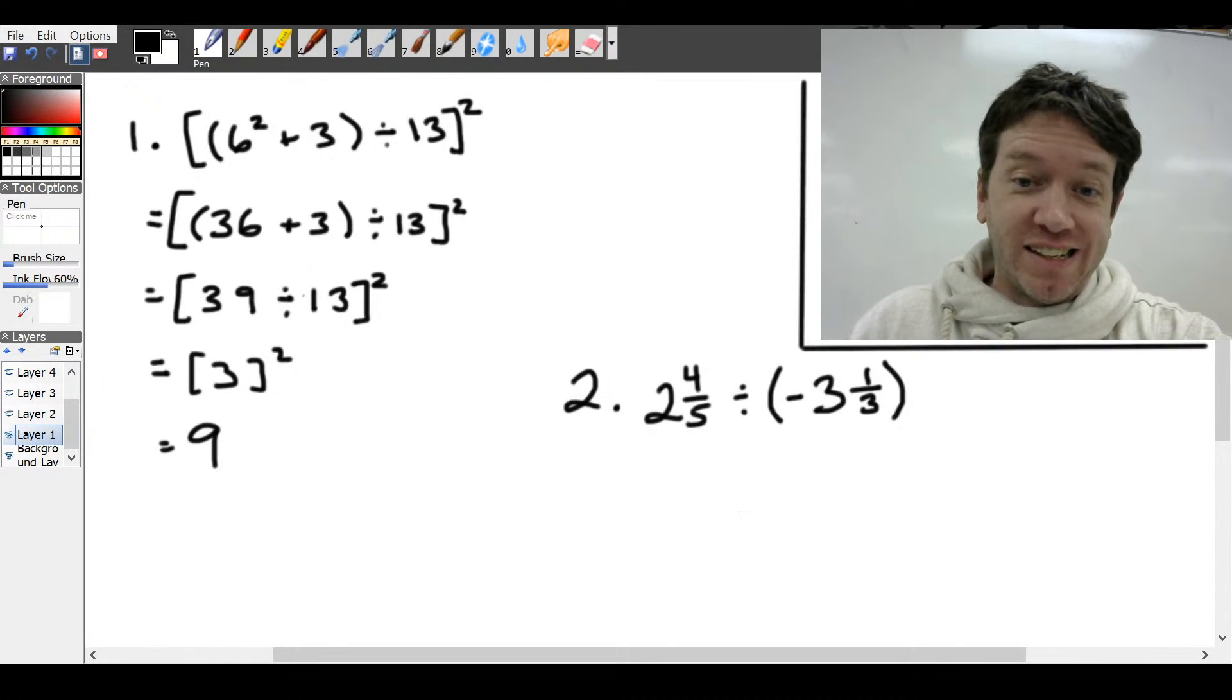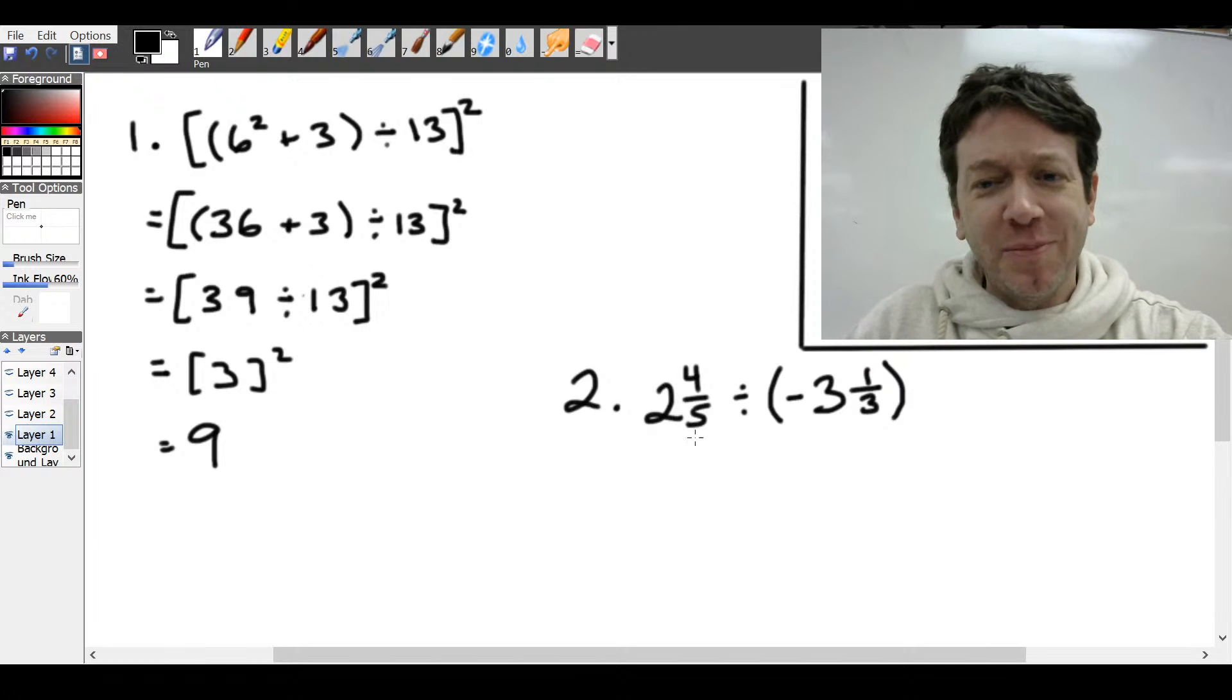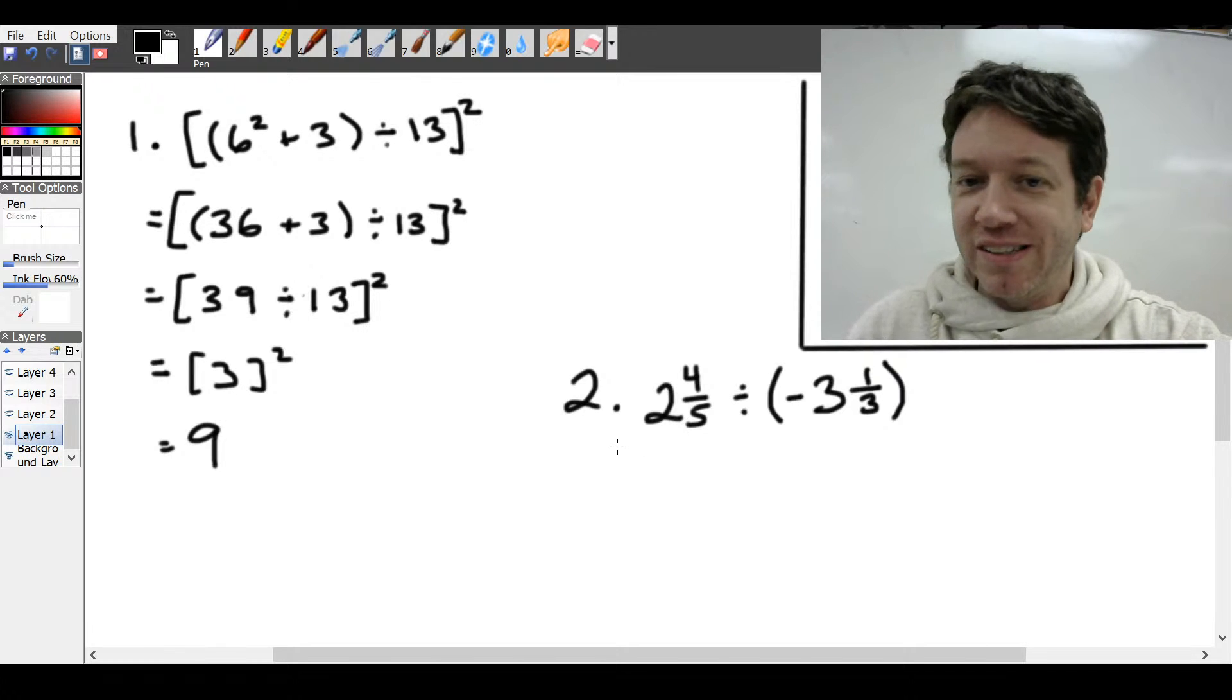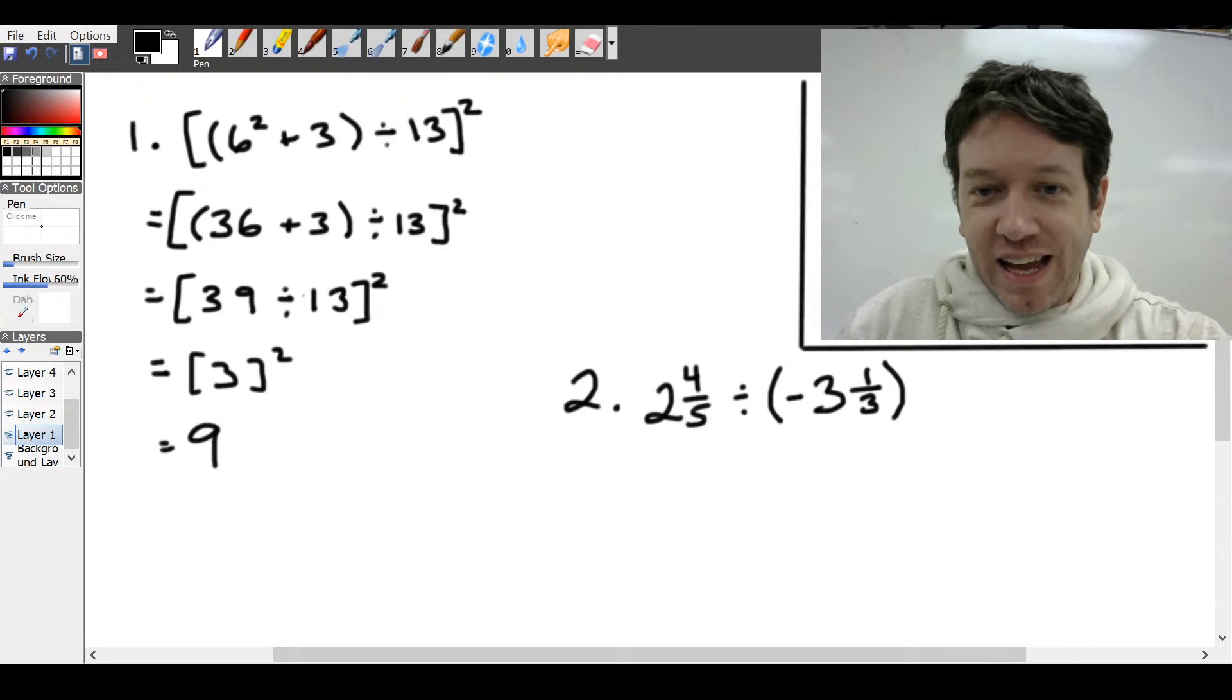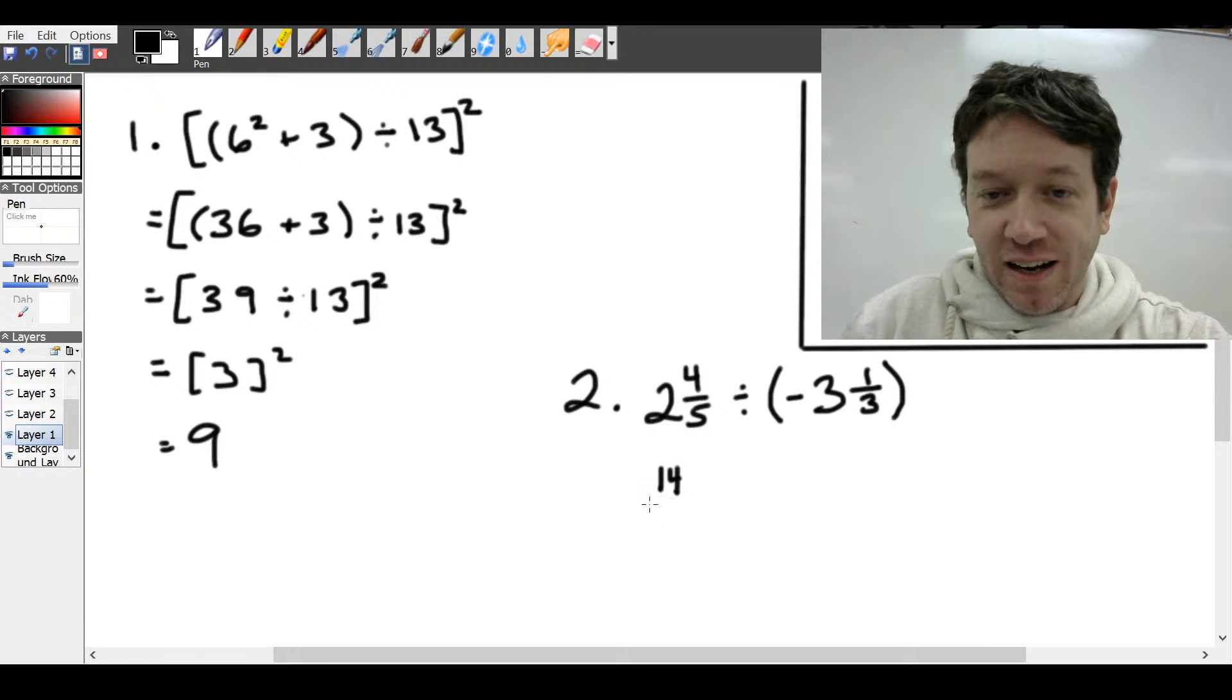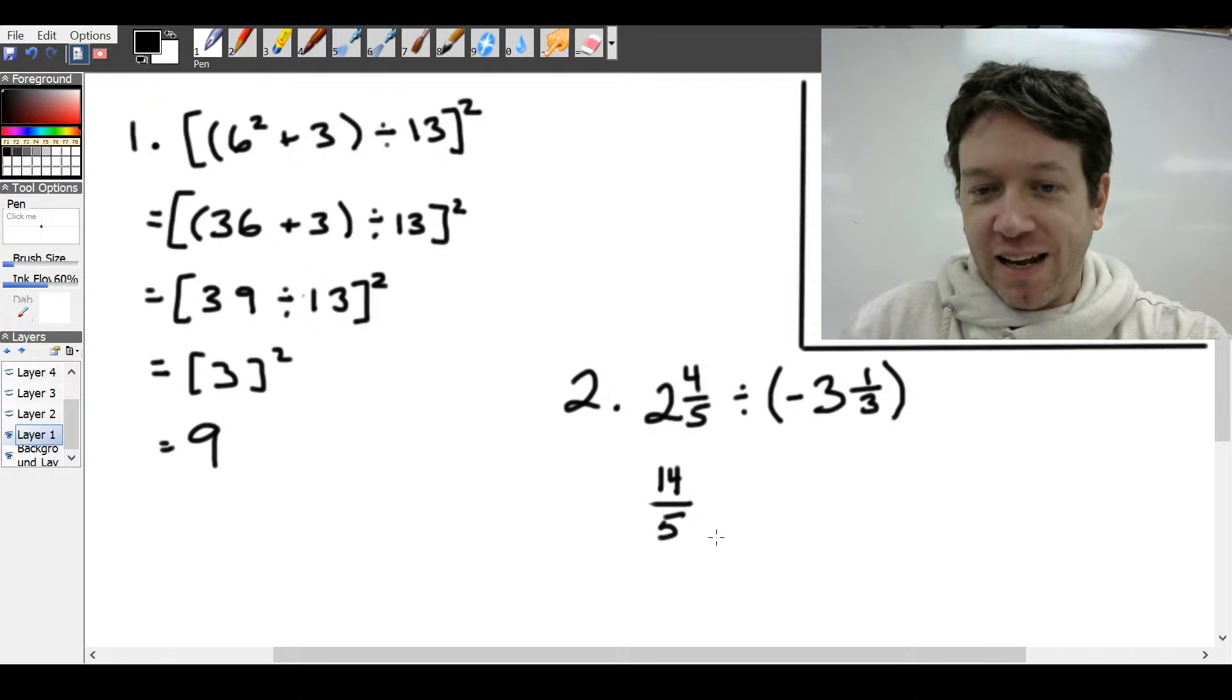All right. So our next example, we have fractions. People don't like fractions. And this one has mixed fractions in it. And to be honest, in high school, we prefer to use improper fractions. So let's fix that. So we're going to take that 5, multiply it by the 2, which gives 10 and add it to the 4.